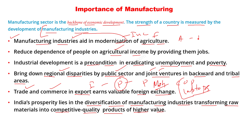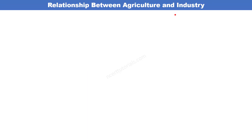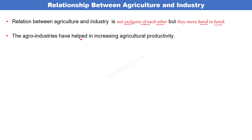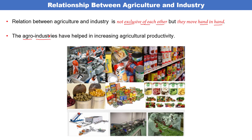Agriculture और industrial sector यानि manufacturing sector में आपस में क्या relation है? Relationship between agriculture and industry is not exclusive of each other - दोनों एक दूसरे से अलग नहीं हैं, they move hand in hand। Agro industries have helped in increasing agricultural productivity। Agro industries वो होती हैं जिनमें raw materials primary sector से मिलते हैं, और जो products तैयार होते हैं वो agricultural sector में काम आते हैं।